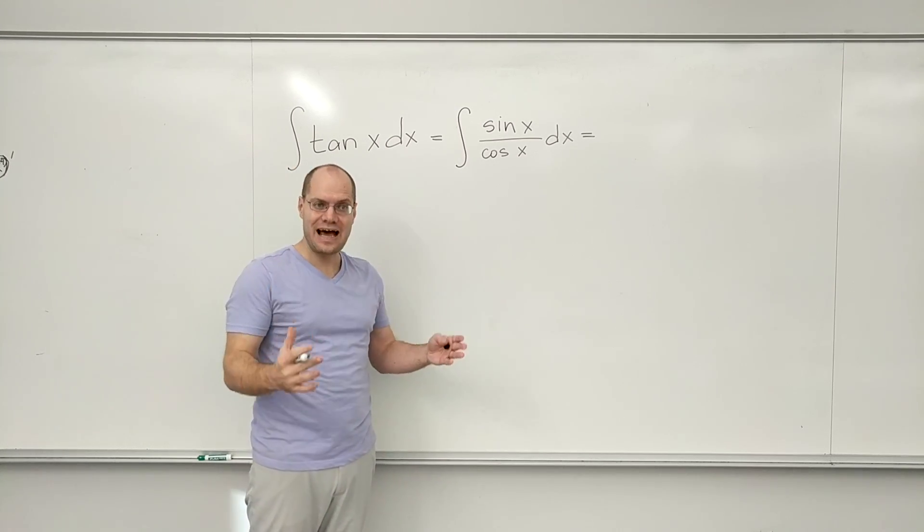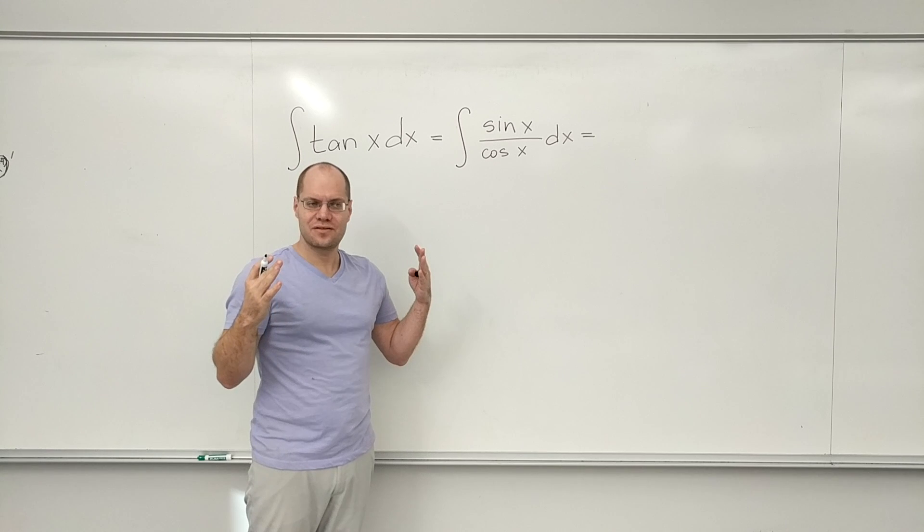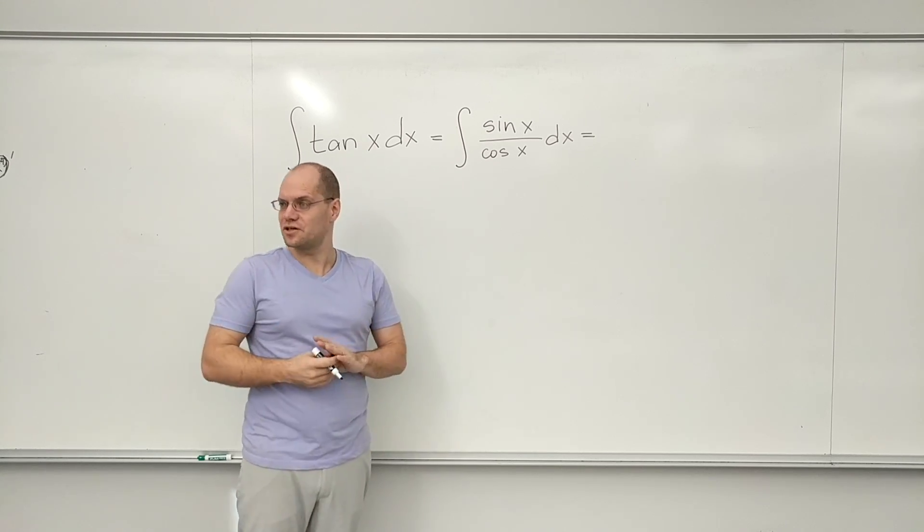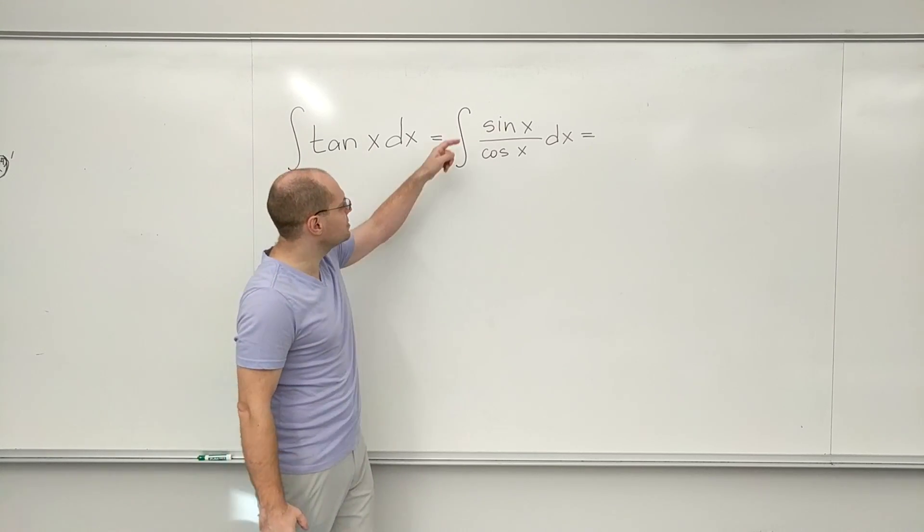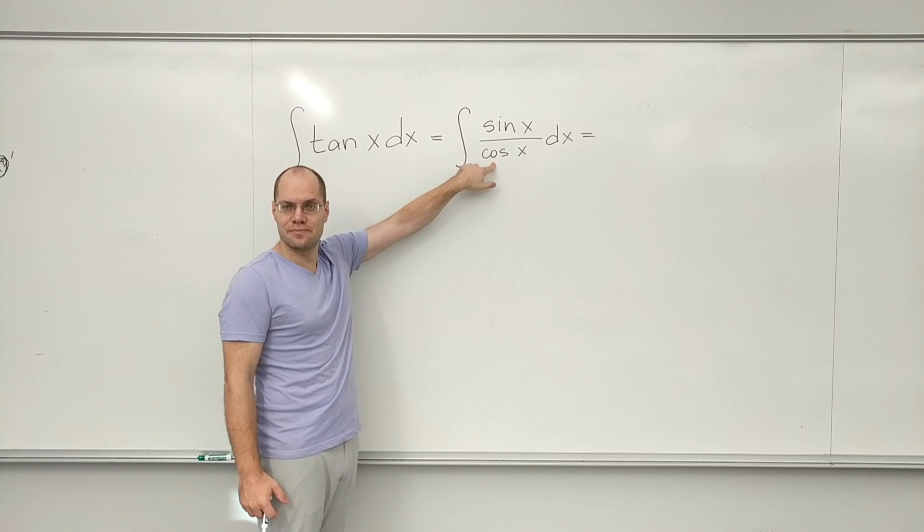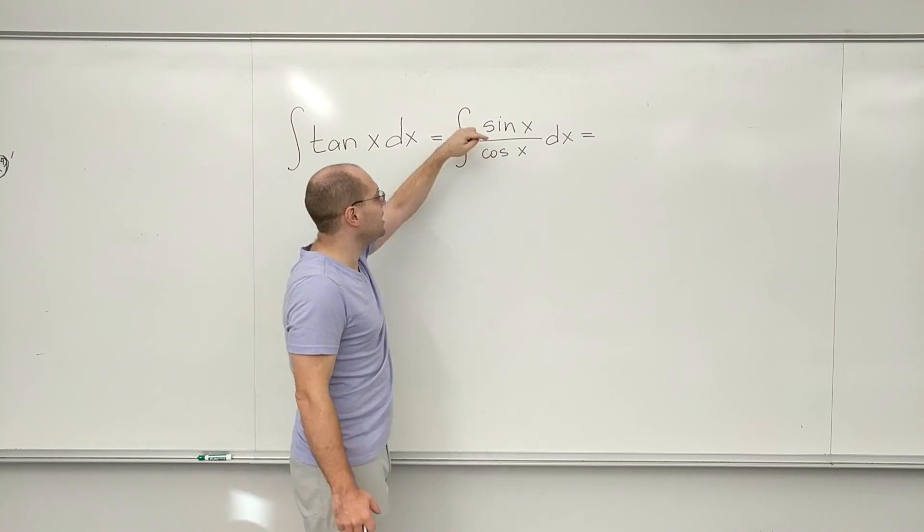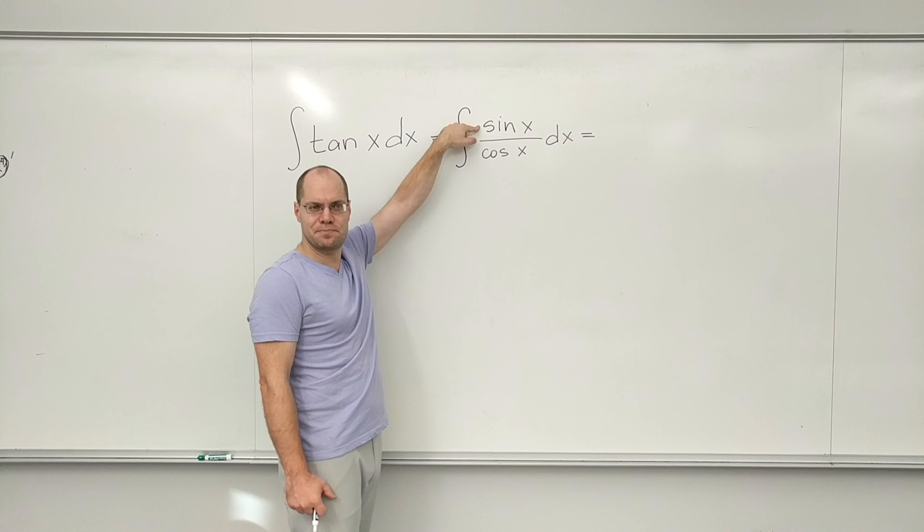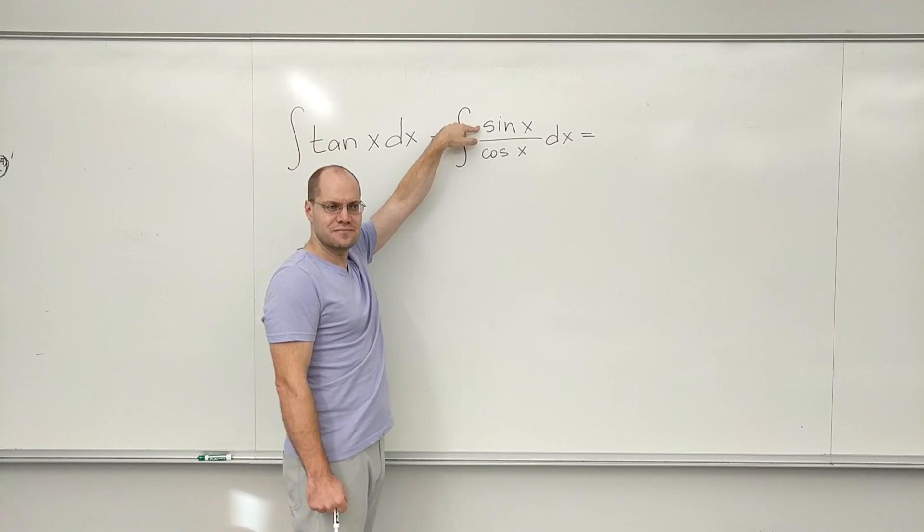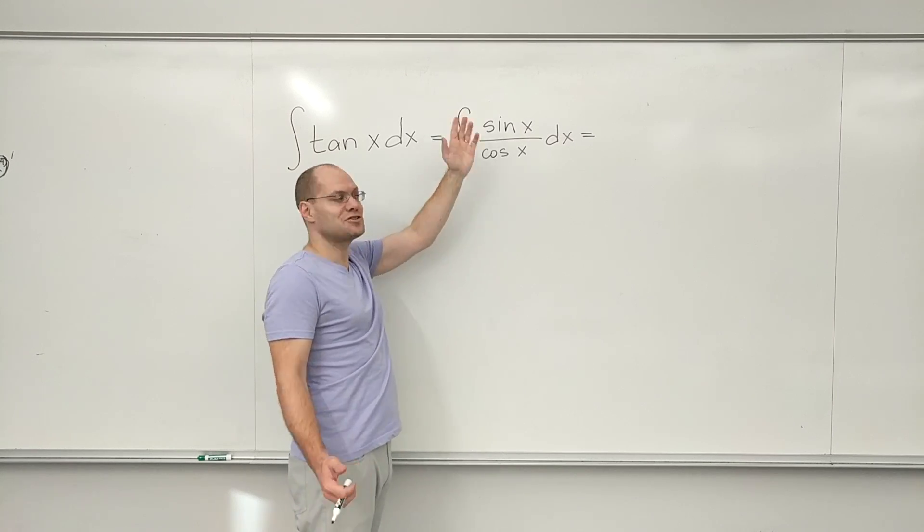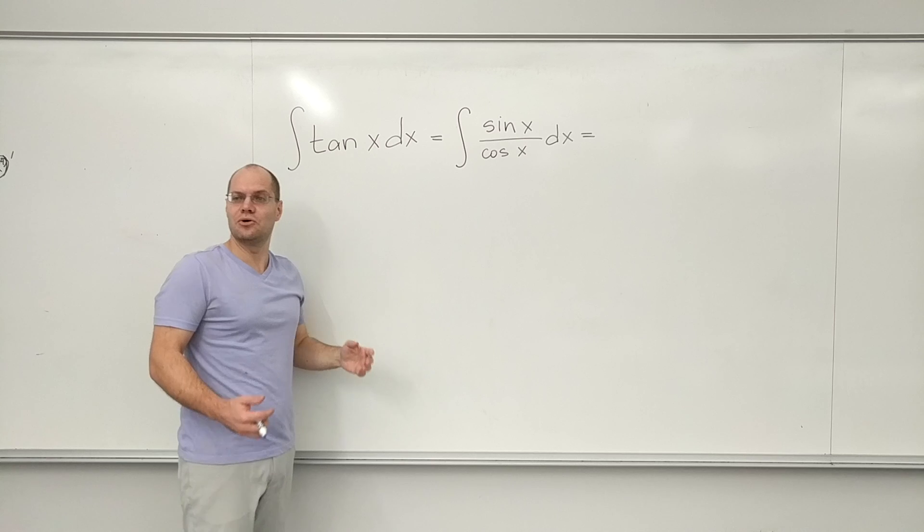Now it has the chain rule signature that we're looking for, because now we definitely see one over something. And by chance do we have the derivative of that something as a multiplicative factor? Yes, we do.